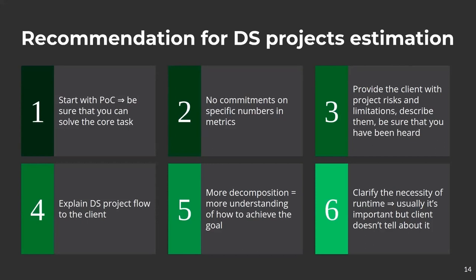Third: provide the client with project risks and limitations. For example, if you tested your POC on audio files of a certain quality and it looked good, but in production the audio files are completely different with a lot of background noise and your approach stops working — it's better to have written this risk down. You can refer back to it and show the client you flagged this from the beginning.